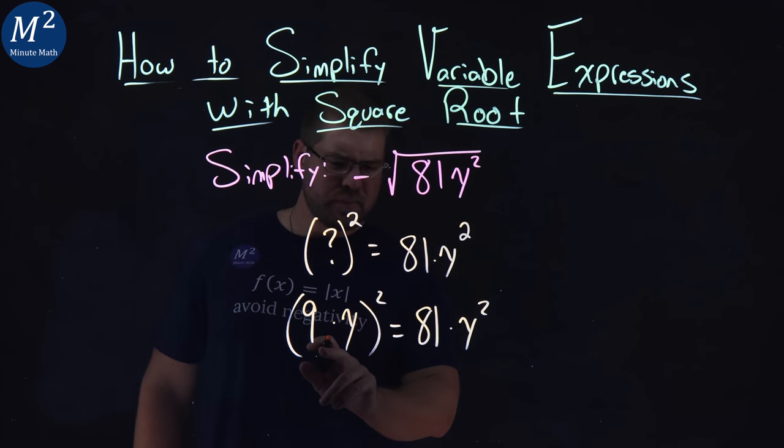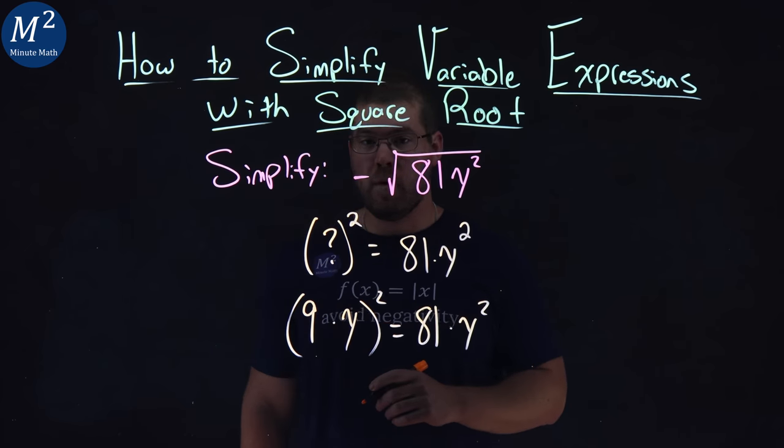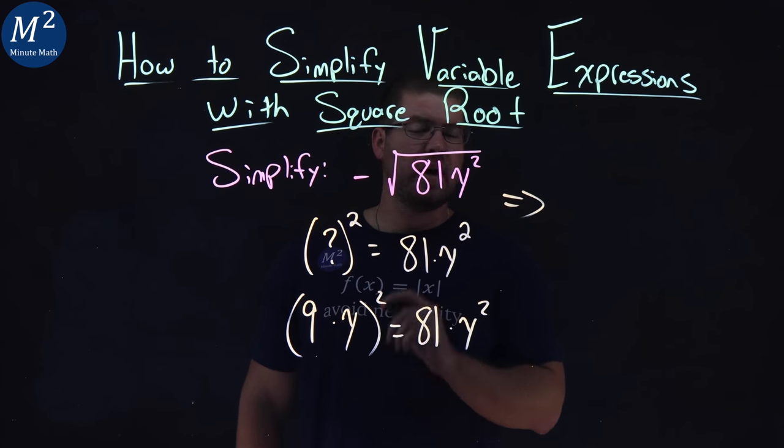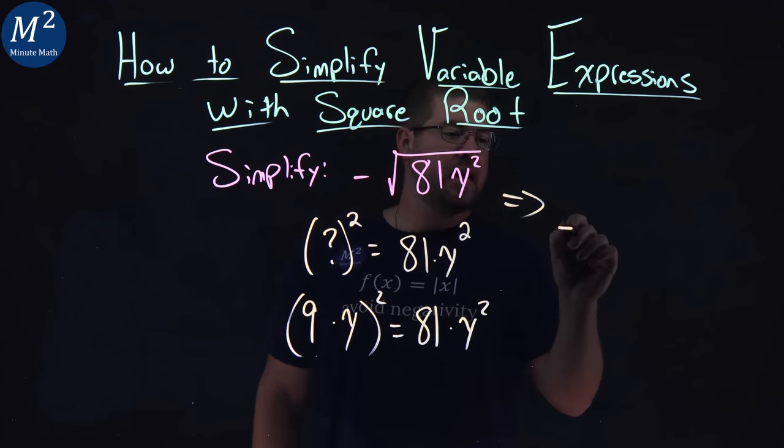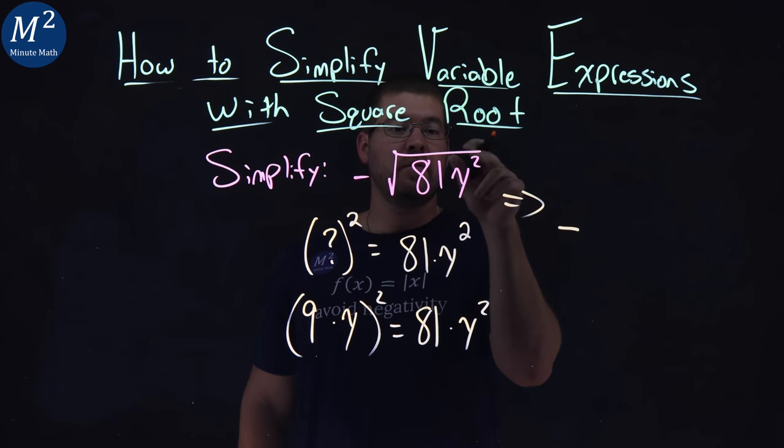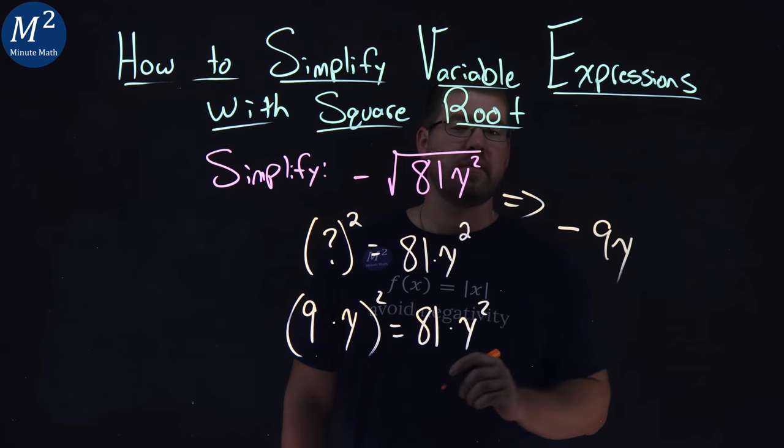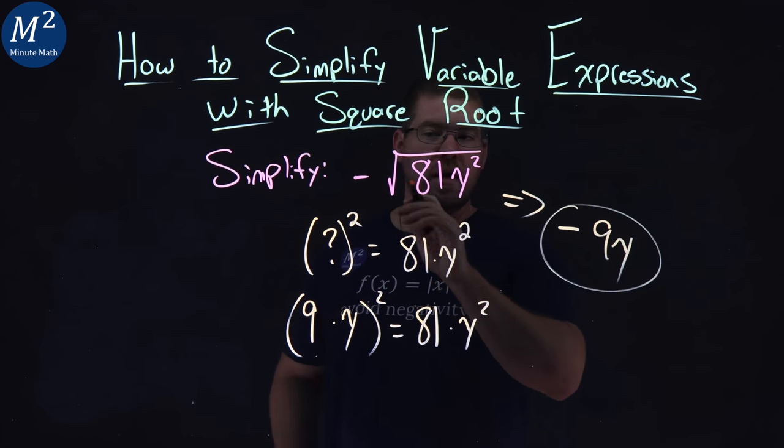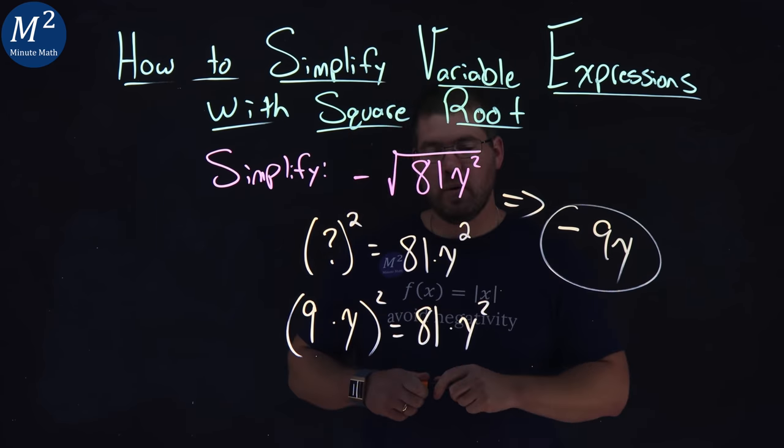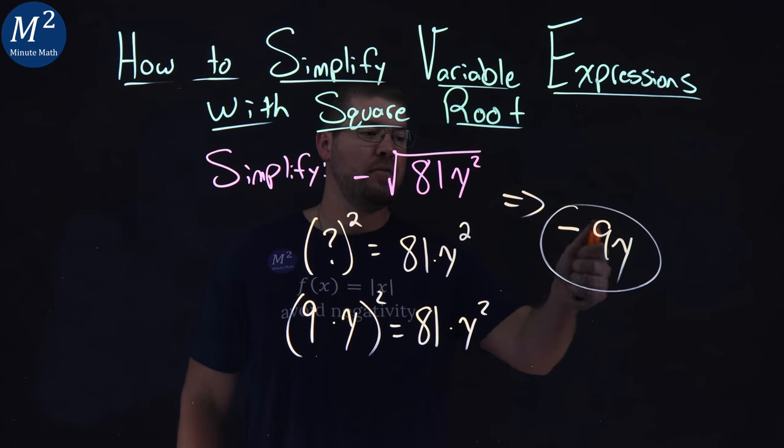And so the inside is just 9y. So if we want to simplify this, the negative stays on the outside, and then if we take the square root of 81y squared, that's equivalent to 9y, and there we have it. Negative square root of 81y squared simplifies to be negative 9y.